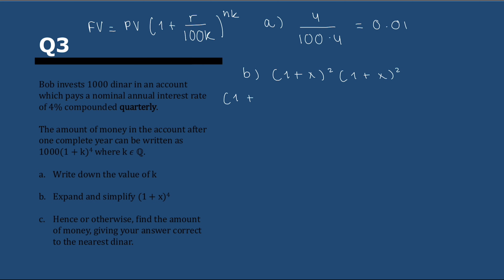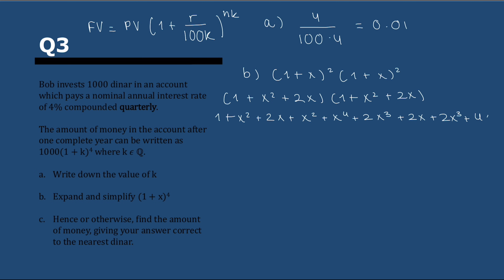Then they're asking to expand and simplify (1 + x)^4. (1 + x)^4 is the same as (1 + x)^2 times (1 + x)^2. So we can simplify each and then multiply all of the terms one by one — tedious but not too difficult. Just be sure not to miss anything. Once we do that, we add the terms: 1 + 4x + 6x² + 4x³ + x⁴.